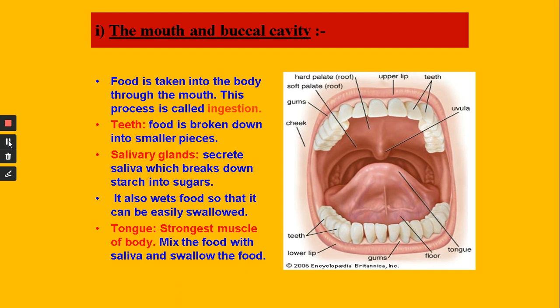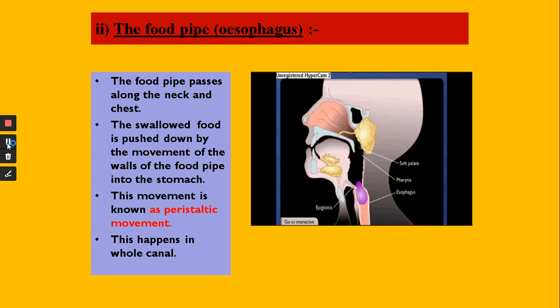So in the buccal cavity we have three parts — teeth, salivary glands, and tongue — and all three have their own functions. The next part is the food pipe or esophagus. Esophagus is spelled o-e-s-o-p-h-a-g-u-s, with the 'o' silent, so it is pronounced 'esophagus'. This esophagus is a tube-like structure which runs from the buccal cavity to the stomach, taking the food from the mouth to the stomach. There is no digestive function here; it just passes the food from mouth to stomach.